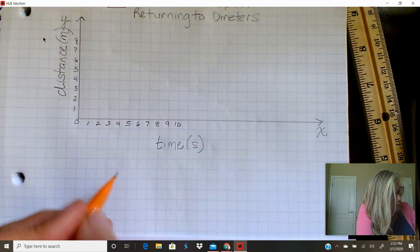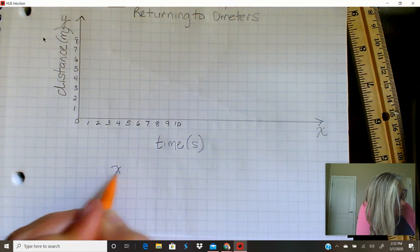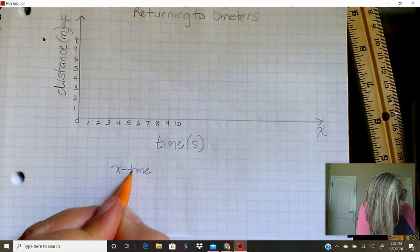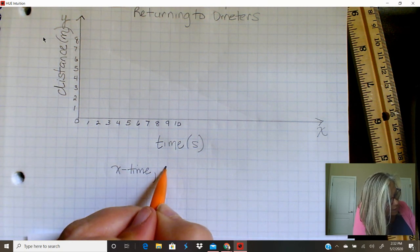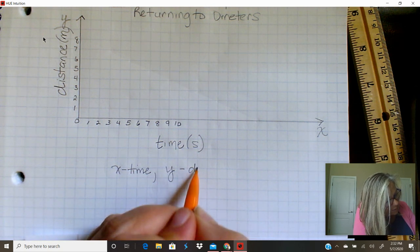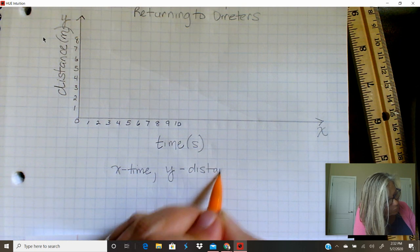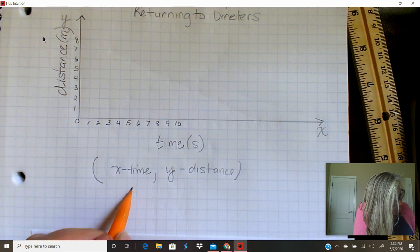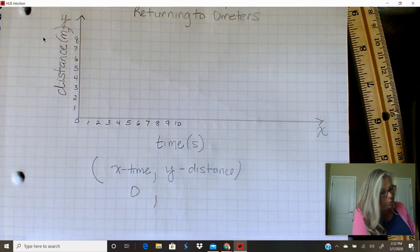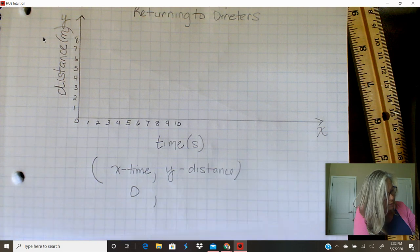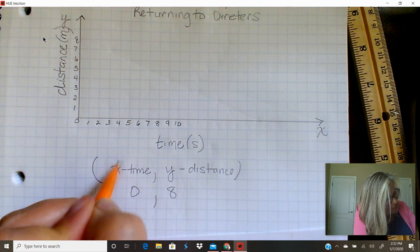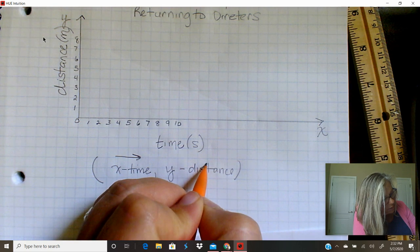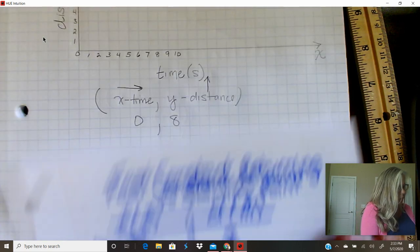All right, so let's make our ordered pairs. X-axis is time, always on a distance time graph. Y-axis is distance. Always remember the first number is the time number, and the second number is the distance number. The time always crawls to the right, and then the distance climbs up after you crawl to the right.